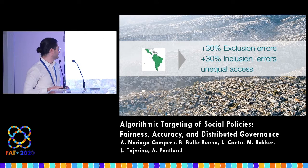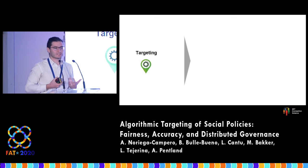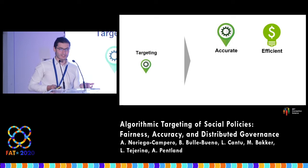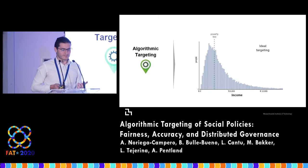Ideally, the design principles for better targeting systems would be: we want targeting that is accurate, we want targeting that is efficient, that is equitable, and that is transparent.